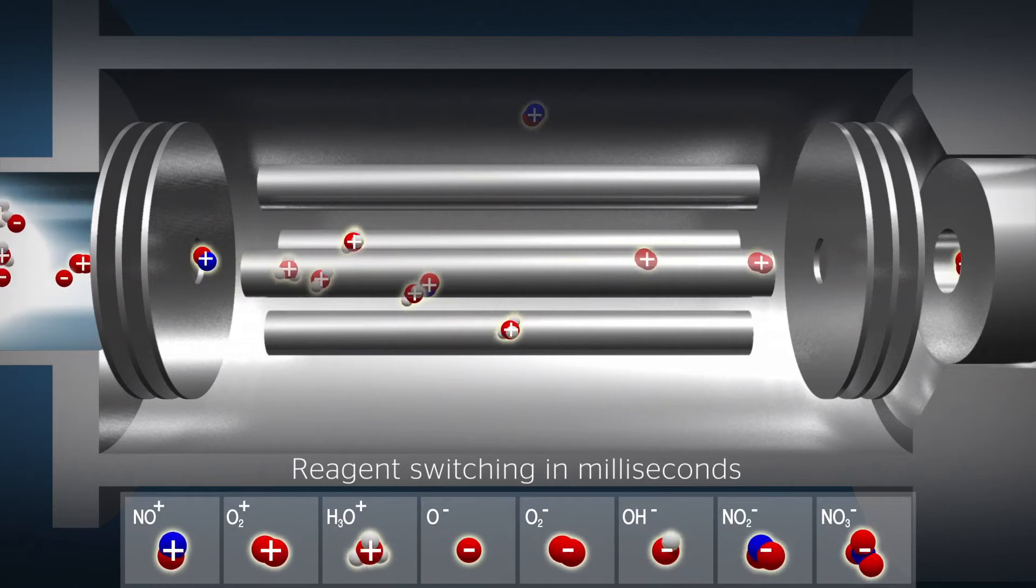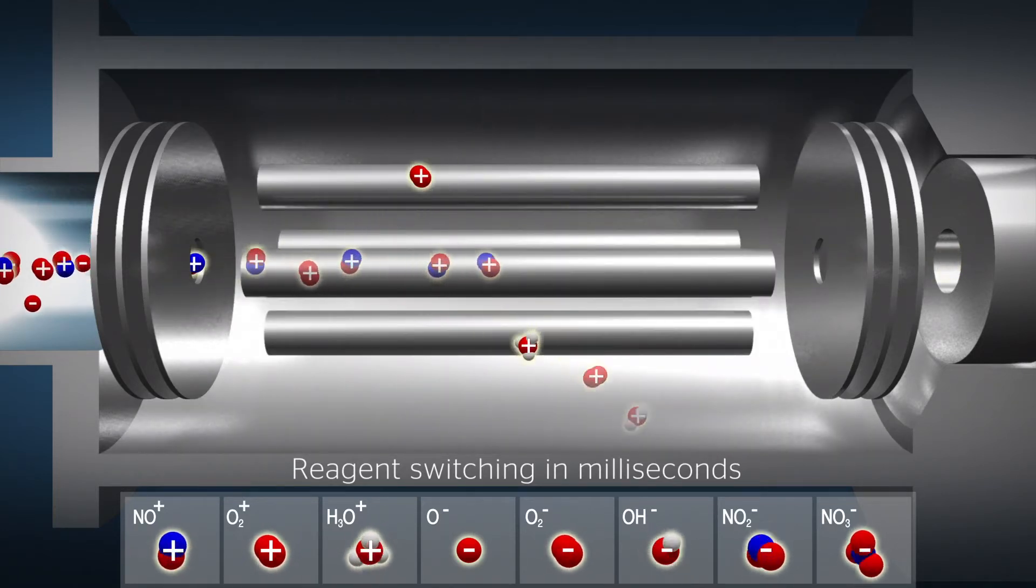Every few milliseconds, the quadrupole selects a different reagent ion to be passed into the flow tube.